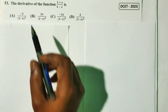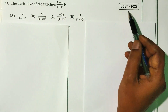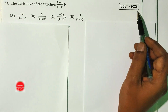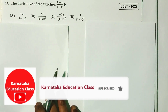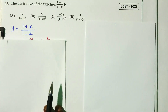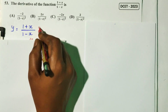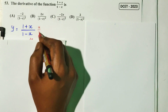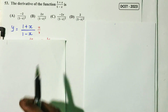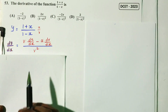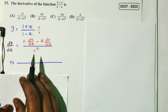Question number 53. The derivative of the function (1+x)/(1-x) — DCT 2023 question. Using the quotient rule (u/v), with numerator u = 1+x and denominator v = 1-x.